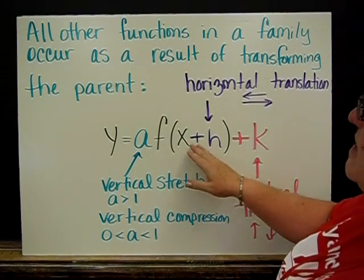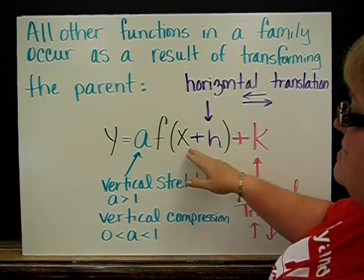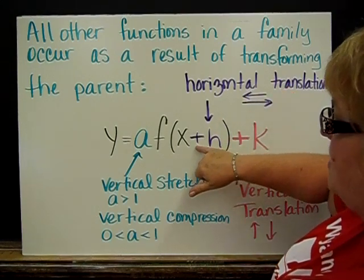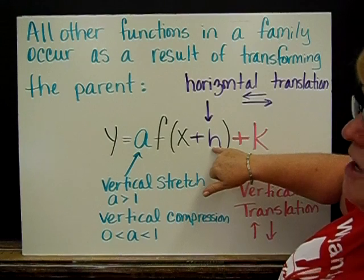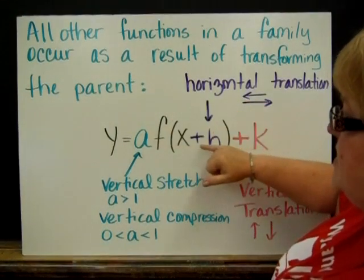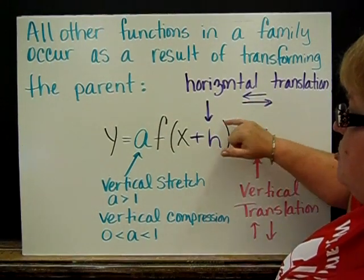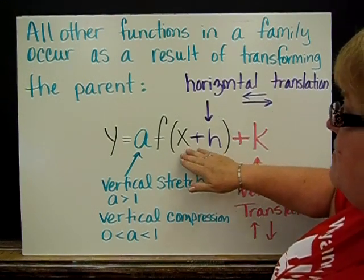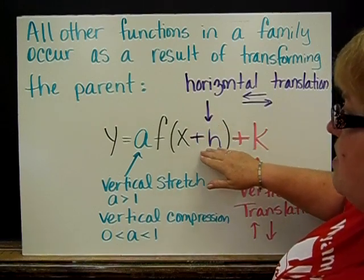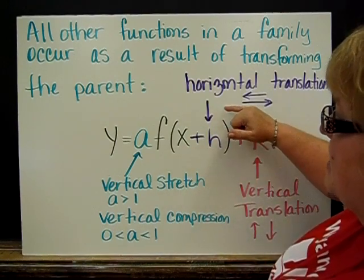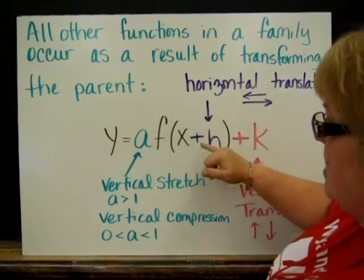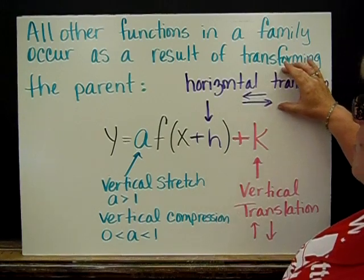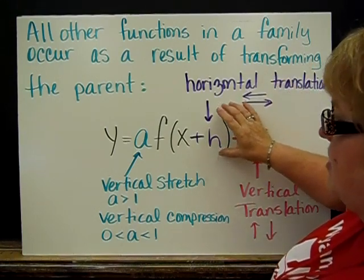The h is inside the parentheses with the x, and that tells us we're going to do a horizontal translation. When we have +h, we go left. When this is -h, we go right. I know that seems backwards, but think of it this way: this wants to be zero. If we're adding something to it to get it back to zero, we have to go that way. If we're taking something away to get it back to zero, we have to go this way. So remember, this horizontal one is opposite of what you would think.